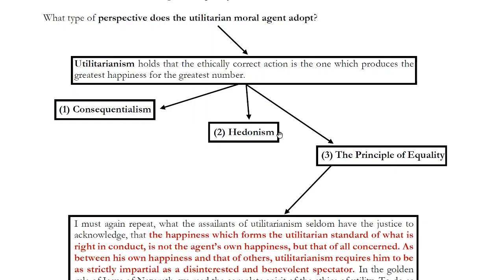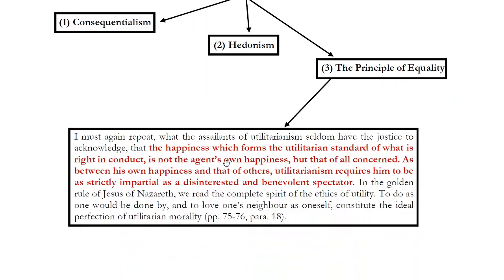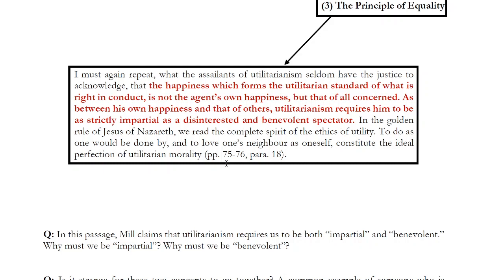So to this point, we have seen what the principle of equality is, and we've also seen how it might contribute to our happiness by making us a more selfless, less self-focused, less egoistic person. The final point I want to make is about the kind of standpoint that the utilitarian philosopher like Mill thinks we should adopt. Mill says: the happiness which forms the utilitarian standard of what is right in conduct is not the agent's own happiness, but that of all concerned. And as between his own happiness and that of others, utilitarianism requires him to be as strictly impartial as a disinterested and benevolent spectator.